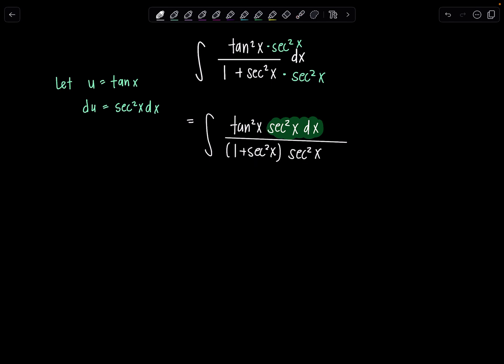Now let's think back to our Pythagorean identities. We know that tangent squared x plus one is secant squared x. So I'm going to replace all the secant squared x's with tan squared x plus one. So this numerator tan squared x is perfect and then secant squared x dx is right there, and downstairs I have one plus instead of secant squared x, I'm going to write tan squared x plus one, and then I have another secant squared x down there which is another tan squared x plus one.